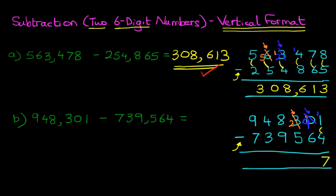Moving on to the tens: nine minus six — the answer is three. Moving on to the hundreds: two minus five. Because two is smaller than five, we take one from the column to its left. Cross out the eight — eight minus one is seven — and move the one across, so the hundreds column now reads twelve minus five, which is seven.